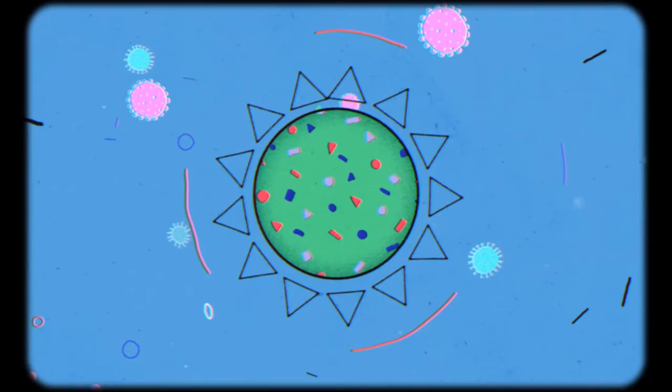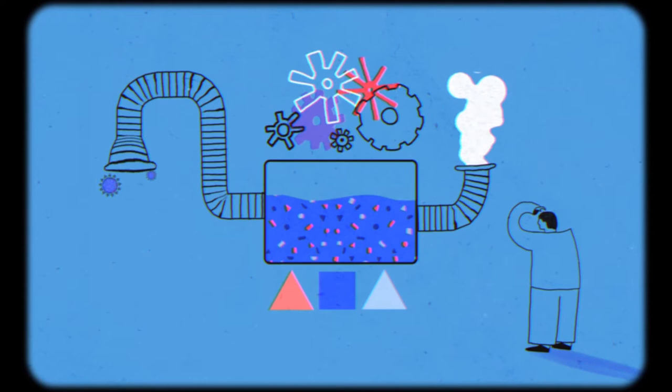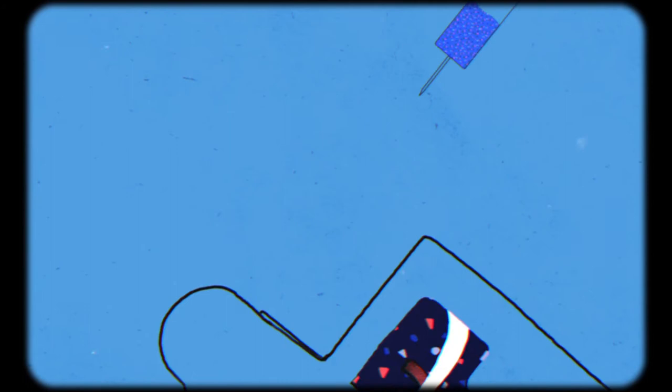So here's how it works. Viruses have a coat that holds their inner infectious parts. If you can figure out how to fabricate just the coat and make it look just like the real thing, you can put that harmless coat in your body and use it to train the immune system to recognize the virus.